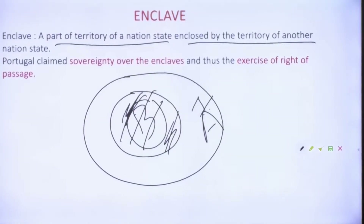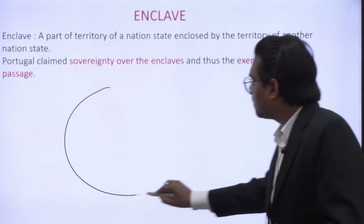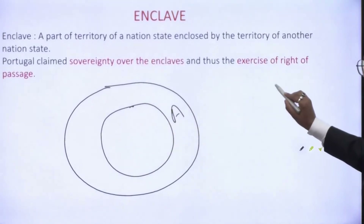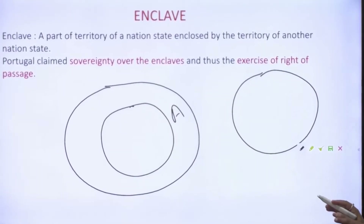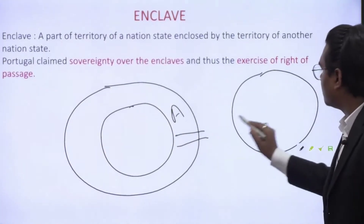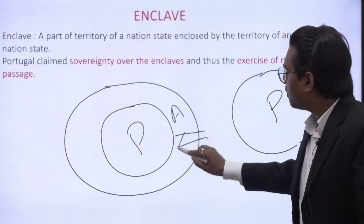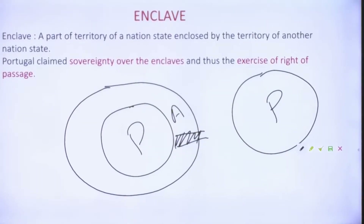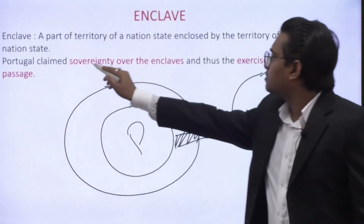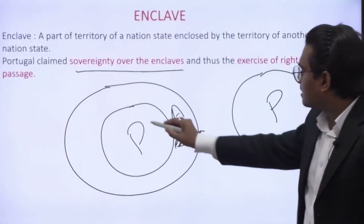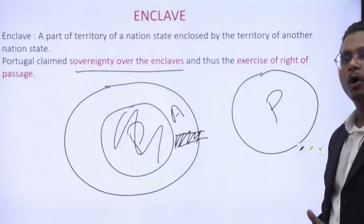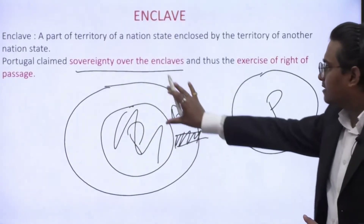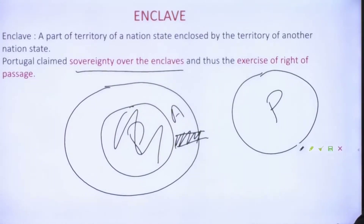Portugal claimed sovereignty over the enclaves, and that is the basis of seeking the right of passage. Suppose this is India, this is the enclave of Portugal within India, and this is Daman — another Portuguese territory. Portugal is asking for the right of passage from the enclave to Daman through Indian territory. Whether we are bound to give this right of passage to Portugal is what we will understand in this case. If Portugal had sovereignty over these enclaves, then Portugal was rightly justified in asking for its rights.